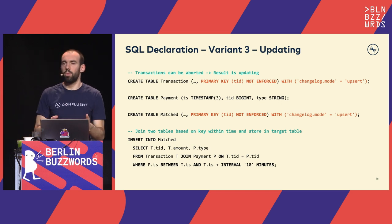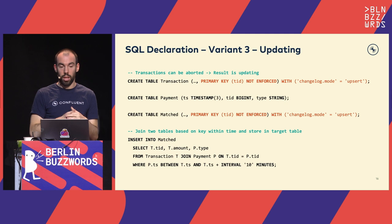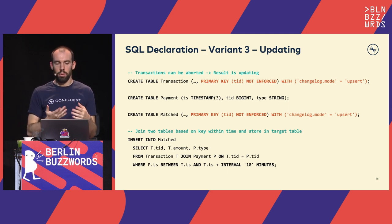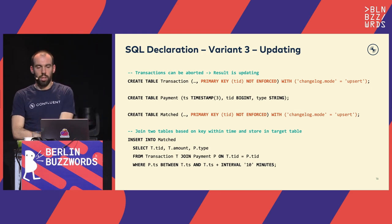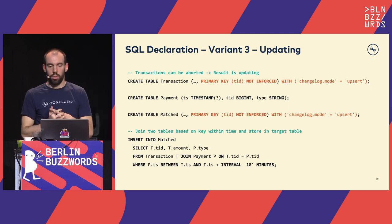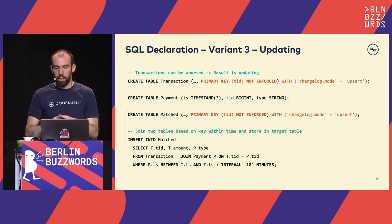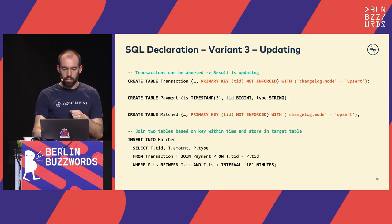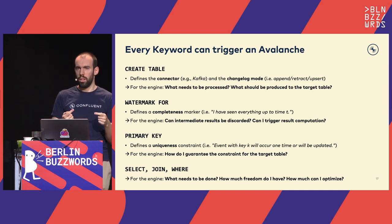The third variant has no watermarks but defines primary keys on the columns. In this case, transactions have a primary key and can sometimes be aborted, so the result is updating — the changelog mode of the table is actually upsert. If you have an updating input you also have an updating output, so the match table gets a primary key and this upserting functionality is defined in the options.